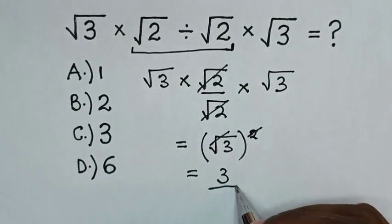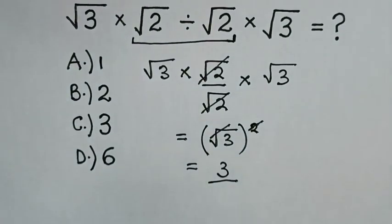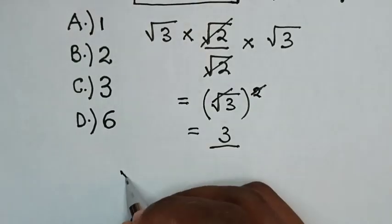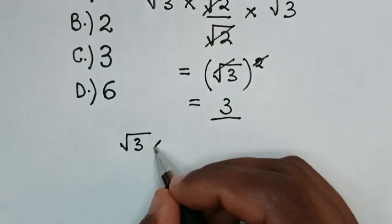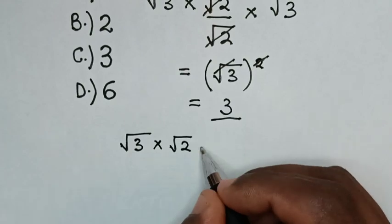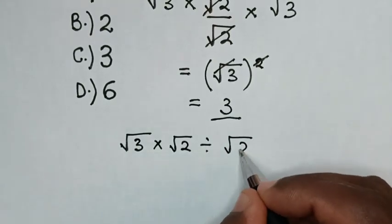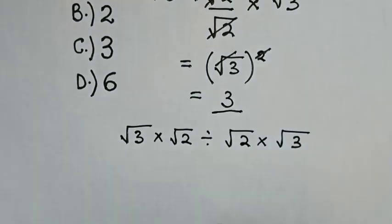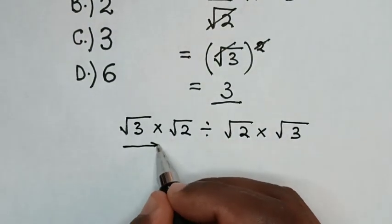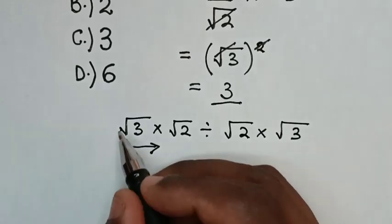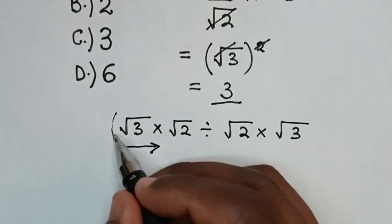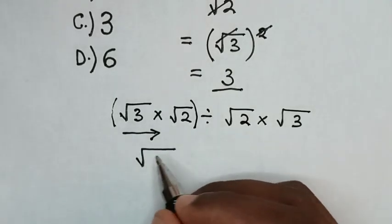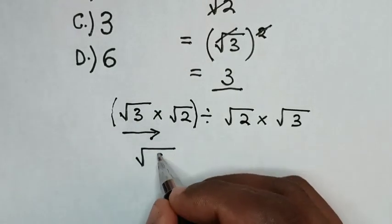So this is our final answer. In another method, solving from the original problem — square root of 3 times square root of 2 divided by square root of 2 times square root of 3 — we start working from left to right. Then square root of 3 times square root of 2 will be square root of 6.